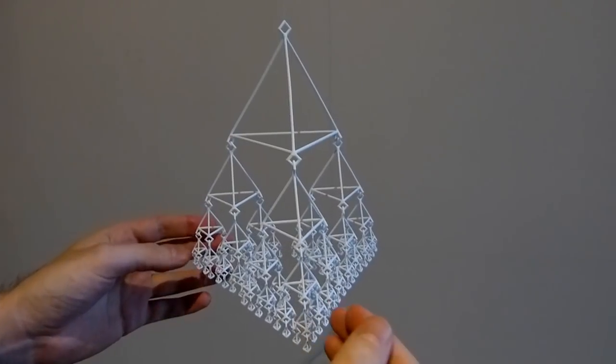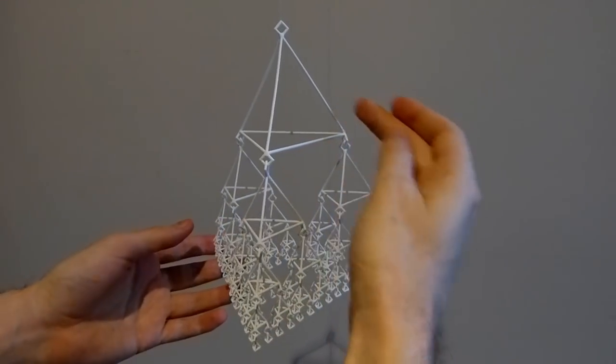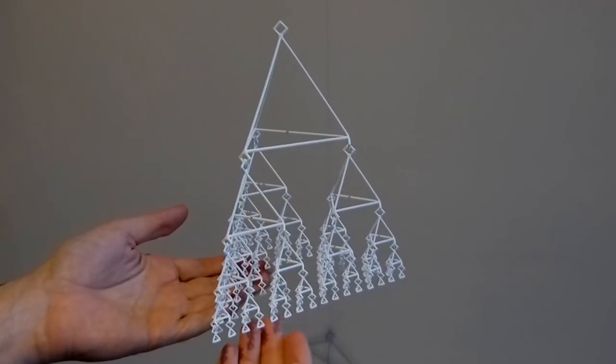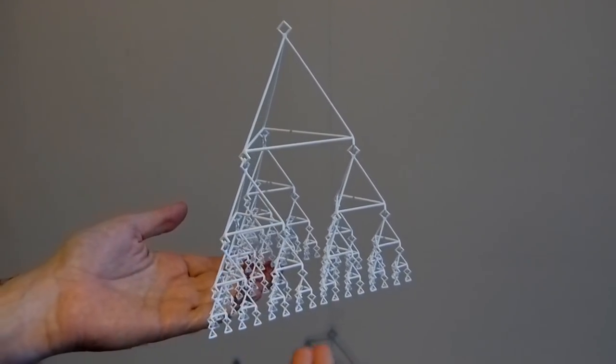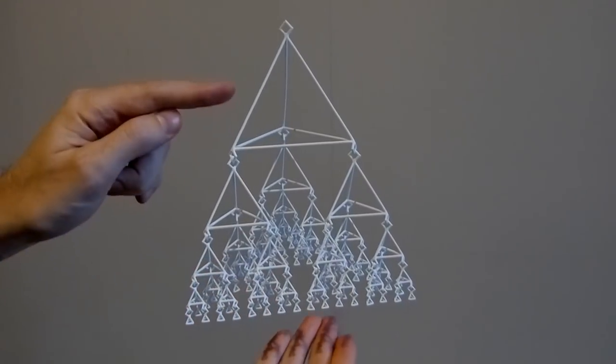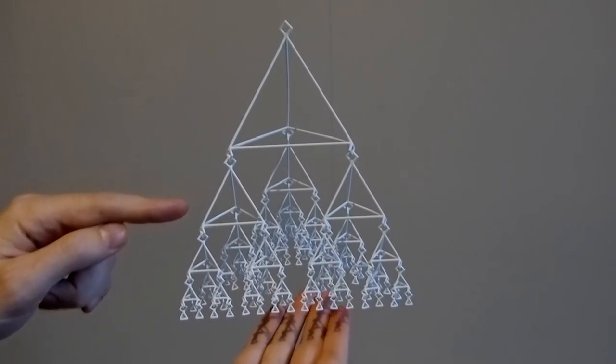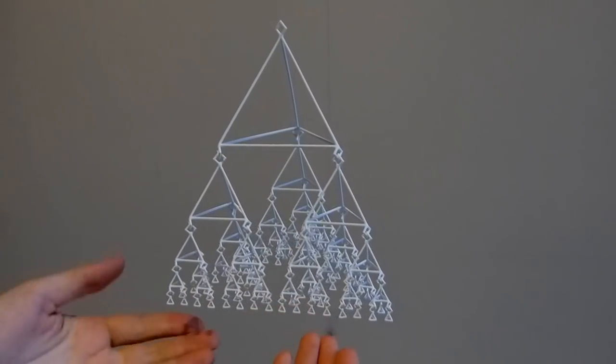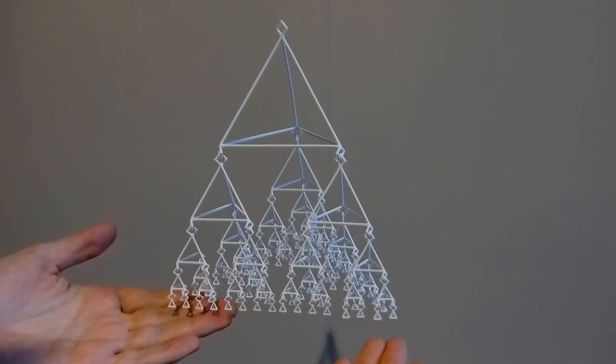And again, this is a level 5 version. There are five levels: 1, 2, 3, 4, 5. So how do you count the number of tetrahedra on the bottom? There's one on the first level, 3, 3 squared, 3 to the power of 3, and 3 to the power of 4, which is 81. So 81 small tetrahedra on the bottom.